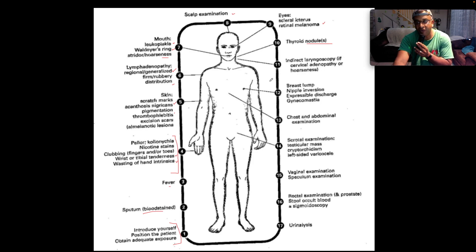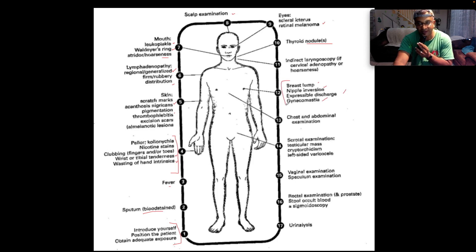Then don't forget in the precordial exam and the chest exam to examine for a breast lump, nipple inversion, expressible discharge, and gynecomastia — which speaks to a probable malignancy in the breast, or to or from the breast.